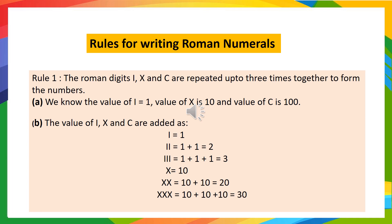Now, we have three basic rules in the Roman numerals. The first rule is the Roman digits I, X and C are repeated up to three times together to form the numbers. In part A, I describe the value of I, X and C.